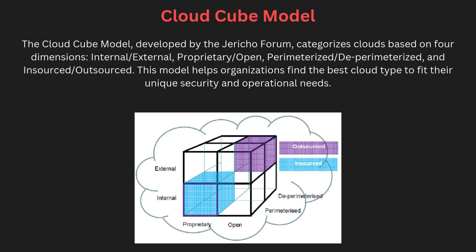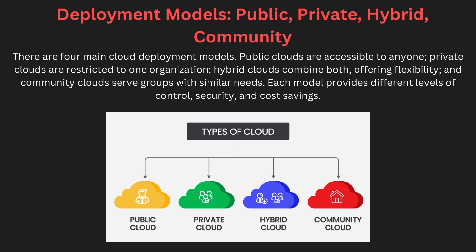The Cloud Cube model, developed by the Jericho Forum, categorizes clouds based on four dimensions: internal/external, proprietary/open, perimeterized/de-perimeterized, and insourced/outsourced. This model helps organizations determine the best cloud setup based on their unique security, privacy, and operational requirements. For example, internal proprietary represents a private in-house cloud, while external open describes a public cloud operated by a third party.